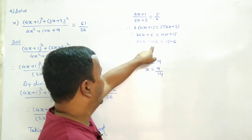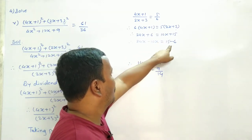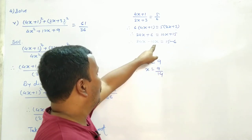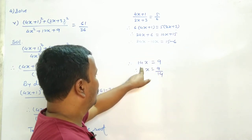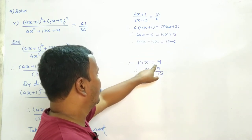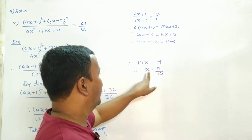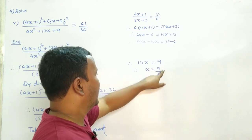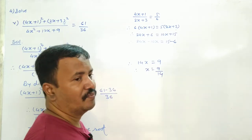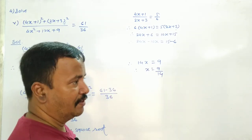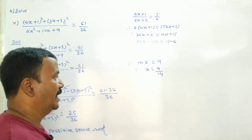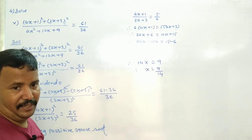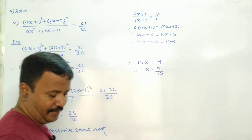So 24x minus 10x is equal to 15 minus 6. Therefore 14x is equal to 9, and x is equal to 9 upon 14. So this is the solution to the equation.